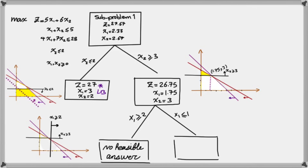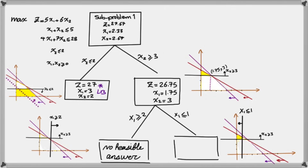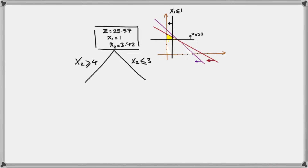Looking at the corner points of this small feasible region, we get x1 = 1 and x2 = 3.42, with an objective function value of 25.57. This is not the end of this branch, because even though x1 is now an integer, x2 has become a non-integer decimal value. So we have to branch on x2 again. Since x2 cannot be between 3 and 4, it must be either less than or equal to 3 or greater than or equal to 4.